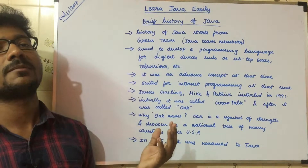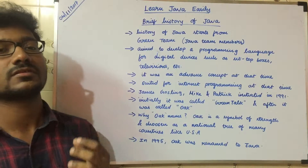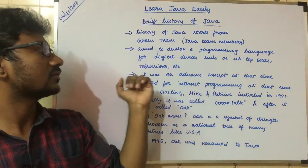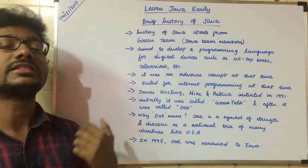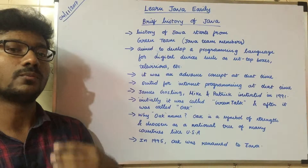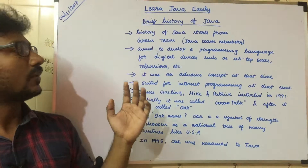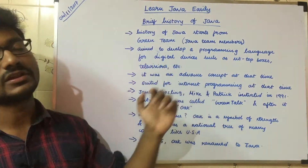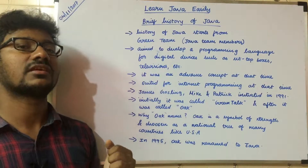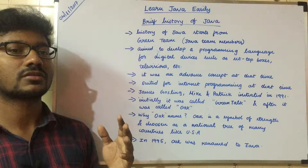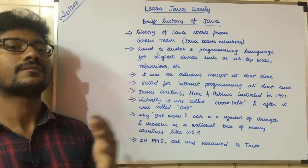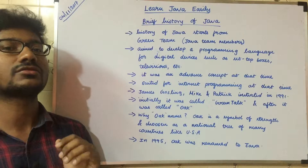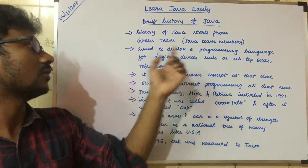At that time they aimed to develop a programming language to support digital devices — to support a few features in the user device, like set-top boxes, television, and so on. But at that time the internet was also booming. So they thought, why should we restrict only to digital devices? Why can't we focus on internet programming also? That's the reason why Java focuses on various topics and things, rather than restricting to the narrow thing called digital devices.